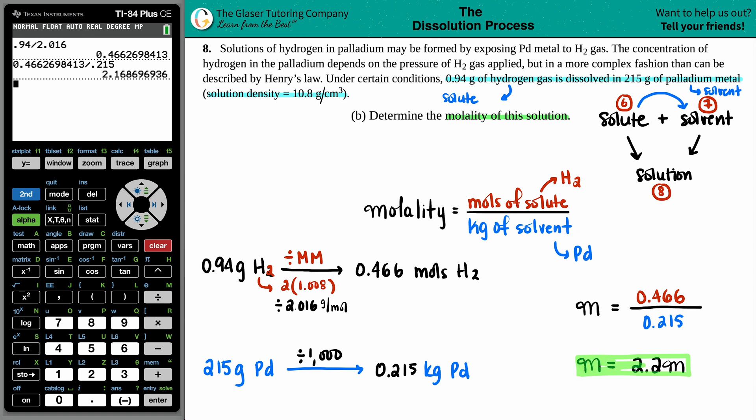You might notice we didn't use the density. That's because molality doesn't involve the solution itself. However, if we were calculating molarity, which is moles of solute divided by liters of solution, then we would need that solution density. For molality, we only care about the solute and the solvent.